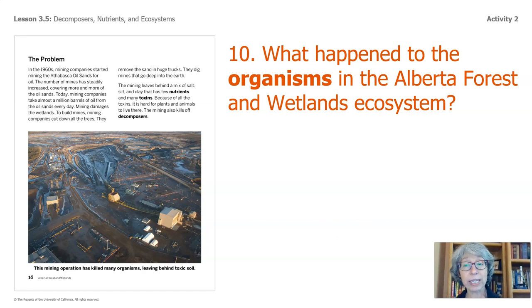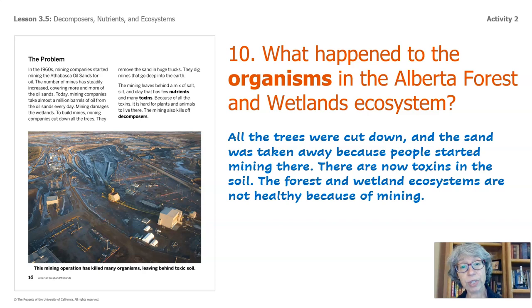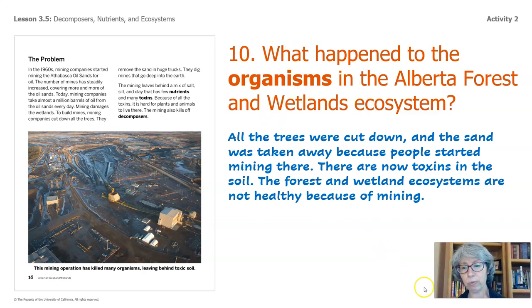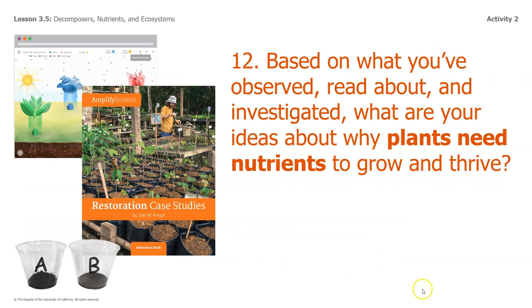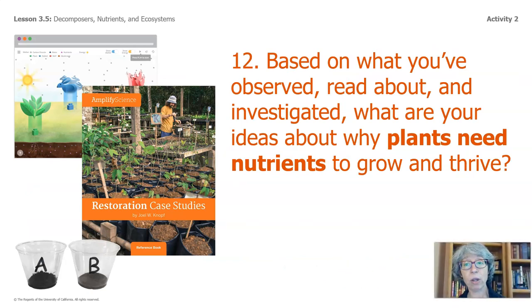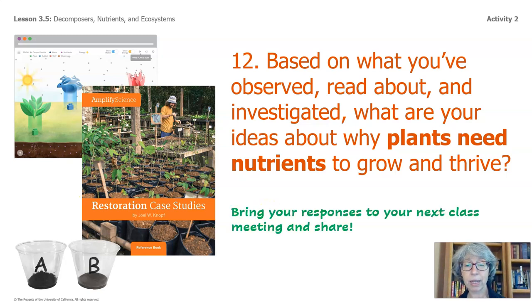I want to jump to question number ten: what happened to the organisms in the Alberta forest and wetlands ecosystem? The trees were cut down and sand was taken away because people started mining there. There are now toxins in the soil. The forest and wetland ecosystems are not healthy because of mining. The toxins in the soil made it hard for plants and animals to live there. The decomposers were killed off and nutrient-poor soil was left behind. Based on all that we've observed, read about, and investigated, what are your ideas about why plants need nutrients to grow and thrive? Bring these ideas to your next class meeting and share.